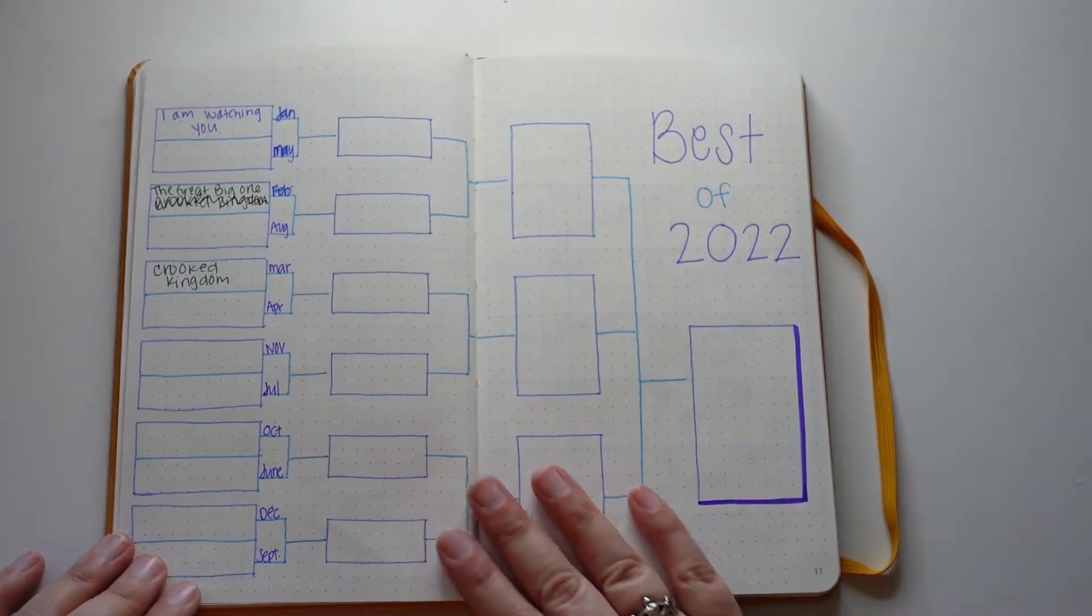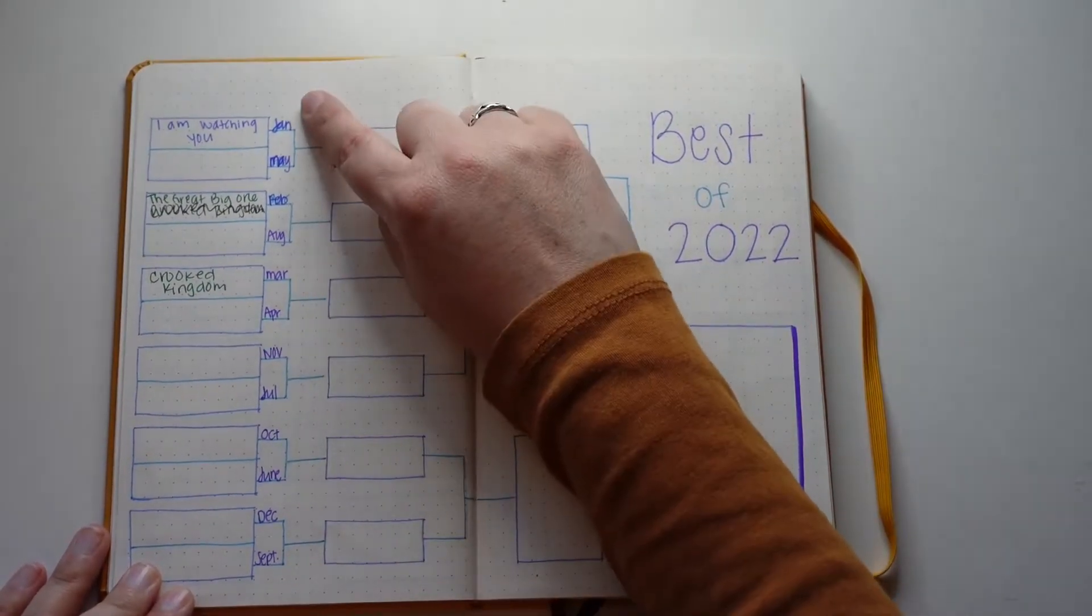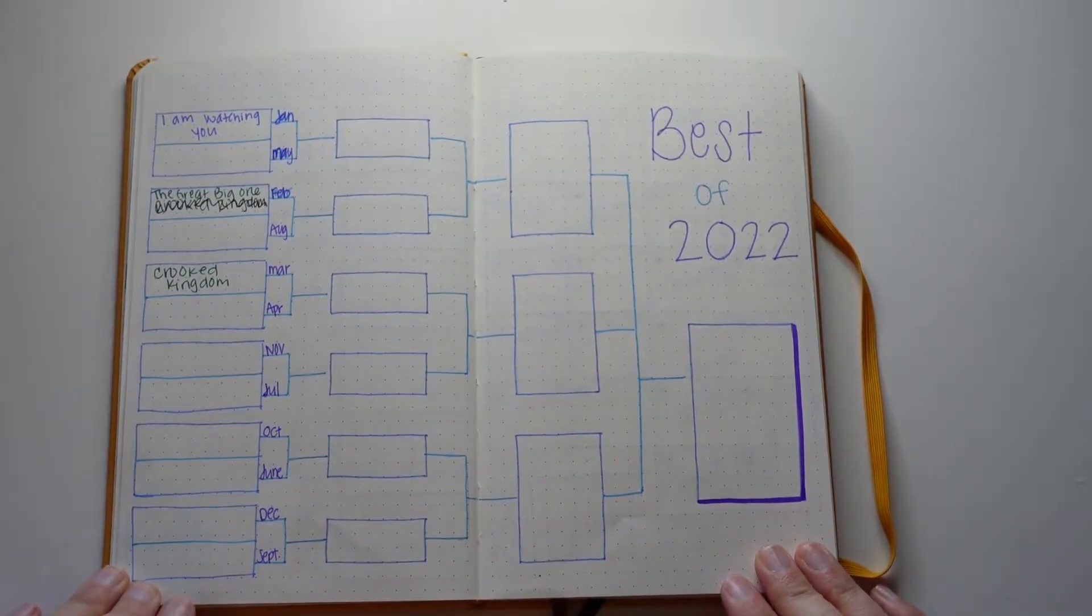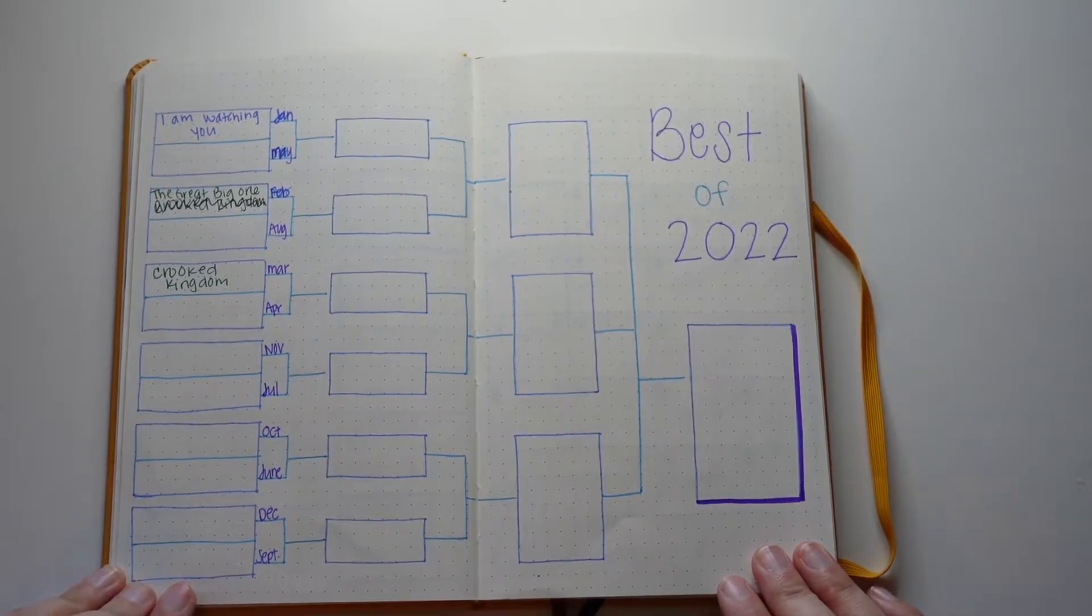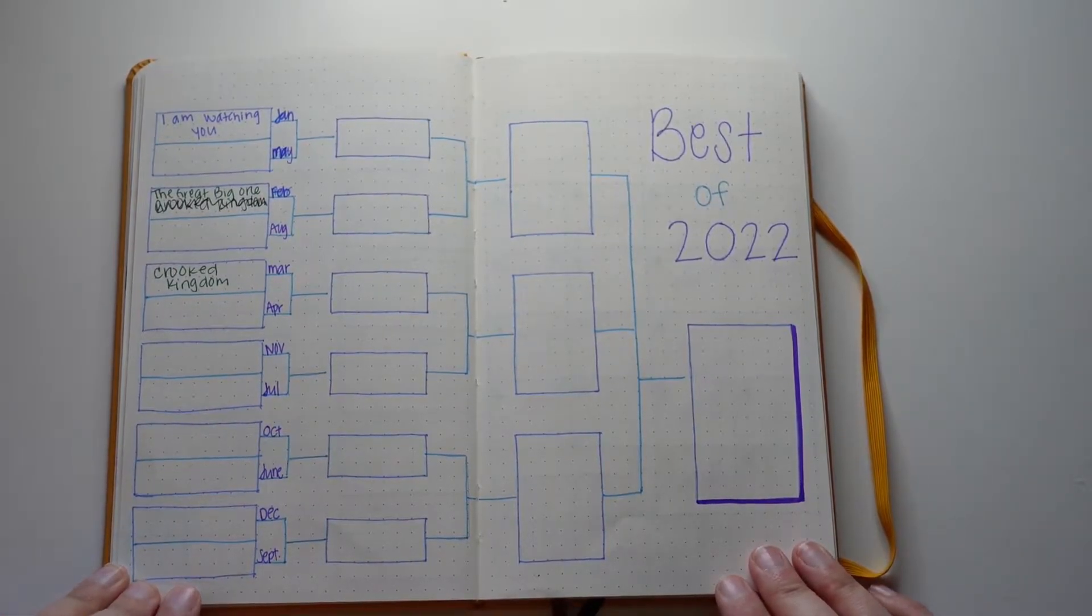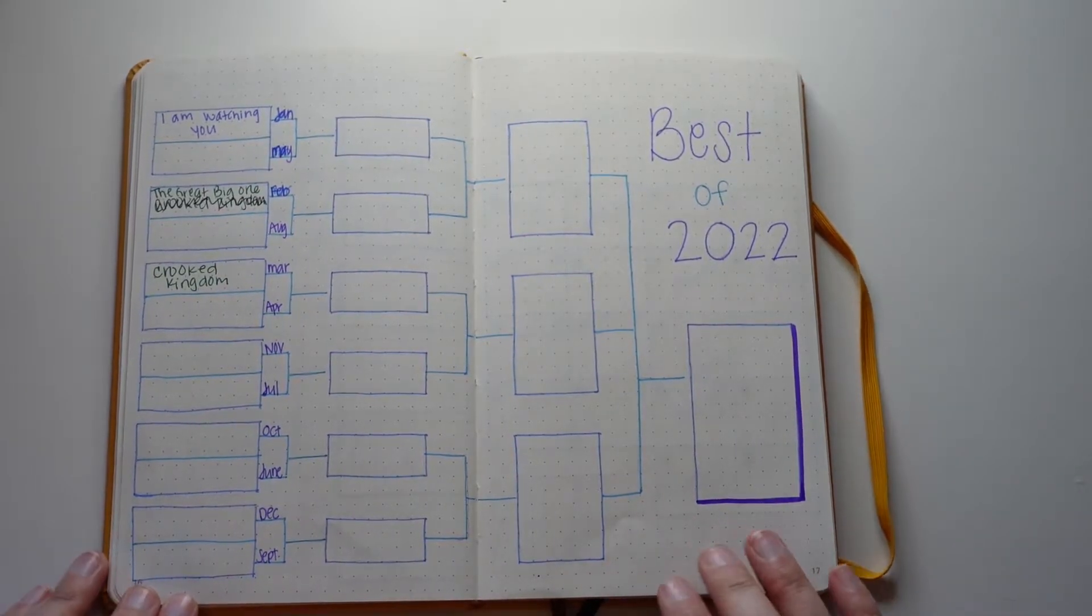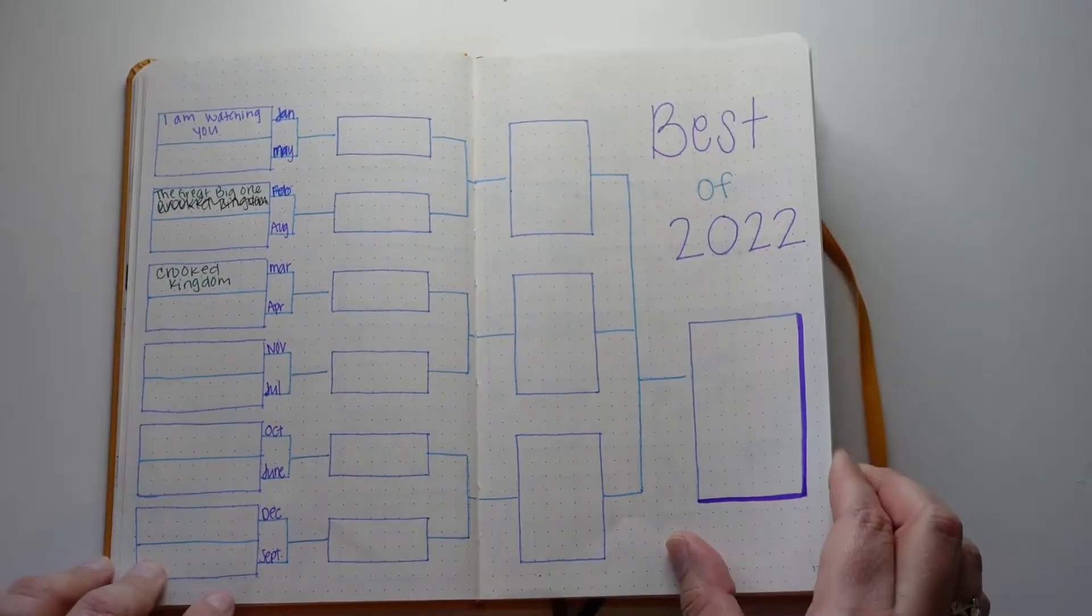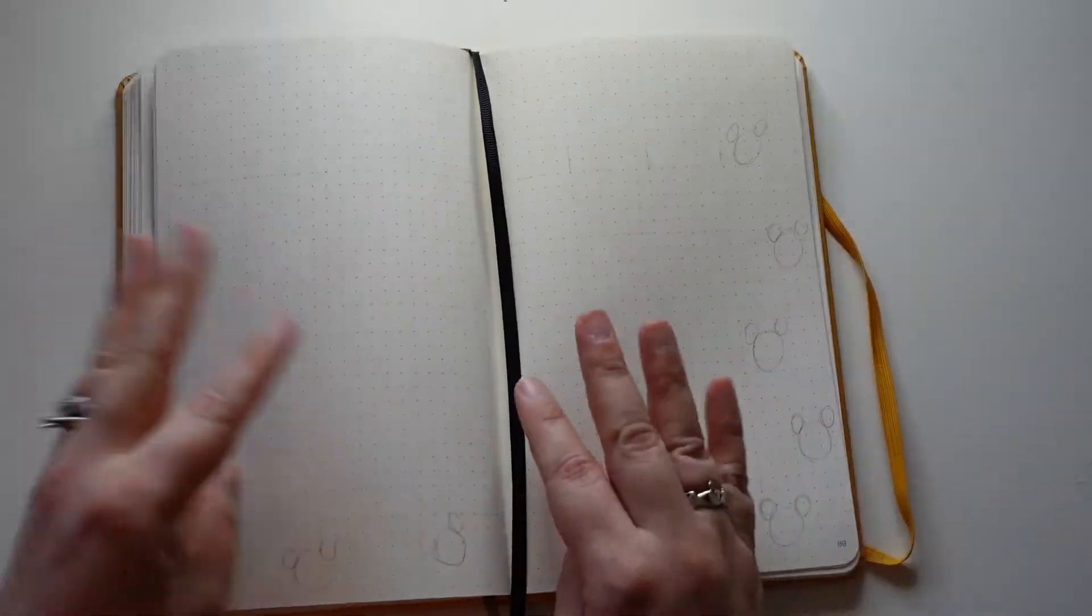The final spread in my reading journal is the best of 2022. It's a bracket for my favorite book of the year. I randomized the months on the left hand side and I put my favorite book of that month in the box. Then I will fill out the bracket and figure out what my favorite book was this year. Maybe I'll do a video at the end of the year where I fill out the rest of the bracket.